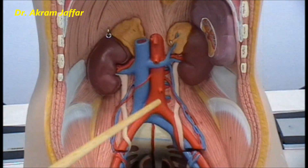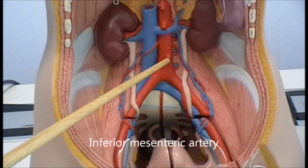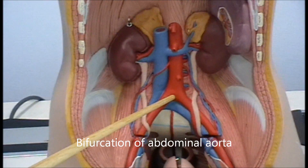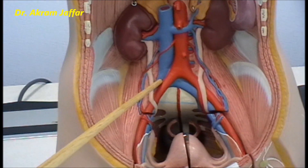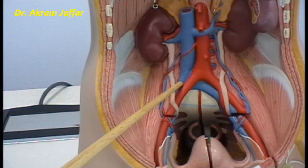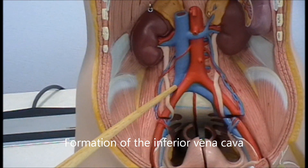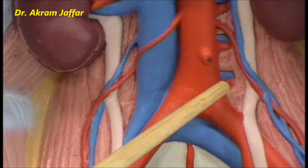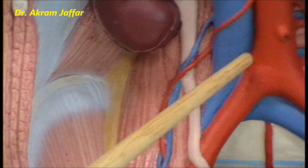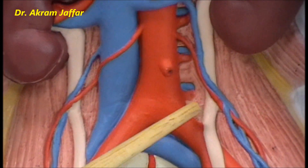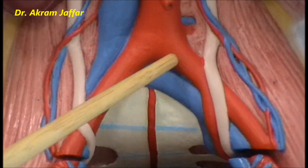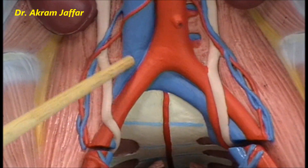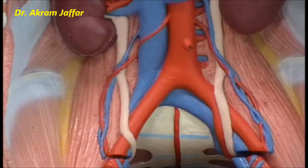Another branch of the aorta is the inferior mesenteric artery, which lies at the level of L3. The abdominal aorta bifurcates at the level of L4. The inferior vena cava extends more distally than the aorta and is formed at the level of L5. Therefore, a section at the level of L4 will show the bifurcation of the aorta into two common iliac arteries, but will show a single inferior vena cava — not the common iliac veins.